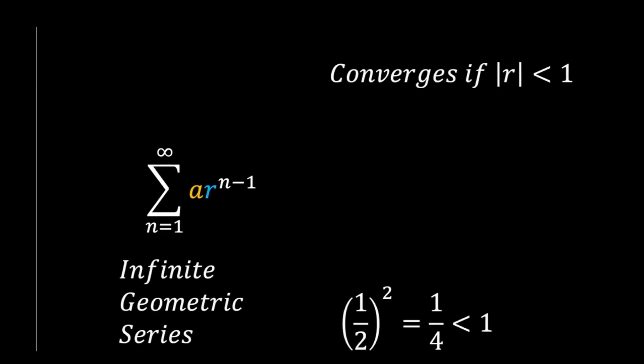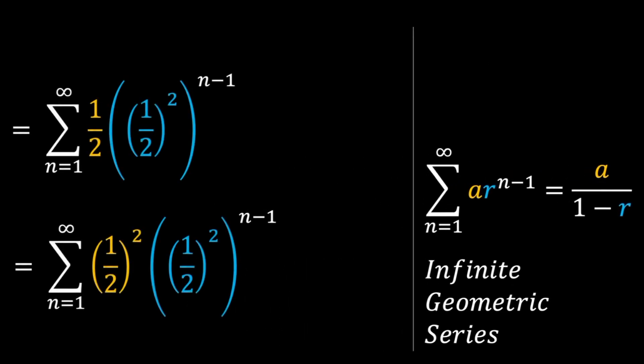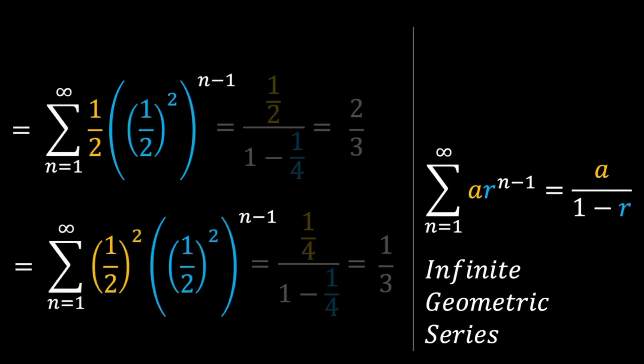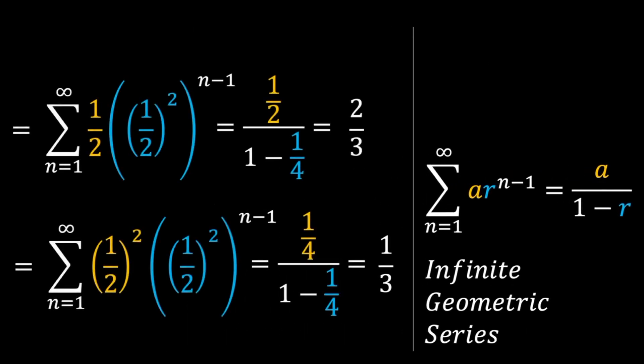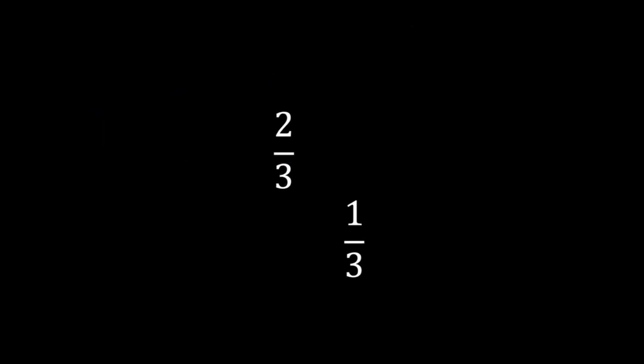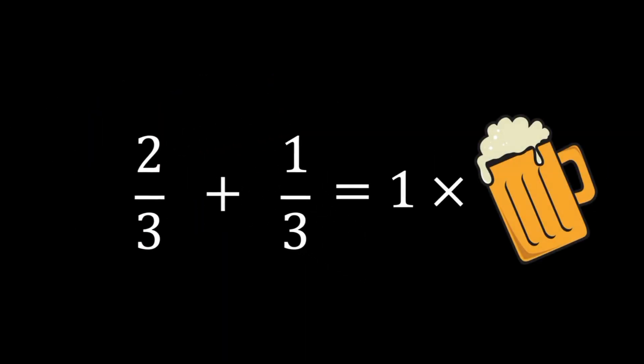Since R equates to 1 over 4, we know that the series will converge to the value A over 1 minus R. Our series 1 and 2 converge to 2 over 3 and 1 over 3 respectively. The two portions indeed sum to 1, since your date and you are sharing a single beer.